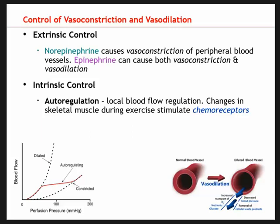Autoregulation is the intrinsic ability of an organ to maintain constant blood flow despite changes in pressure during exercise. It's essentially a sensory extension of the peripheral nervous system into blood vessels, detecting changes in chemical concentrations like CO2, hydrogen ions, or lactate, triggering a reflexive action. At low perfusion pressures we see dilation; at higher perfusion pressures we see constriction. Autoregulation is a good balance between the two, determining the total amount of blood flow into an area.